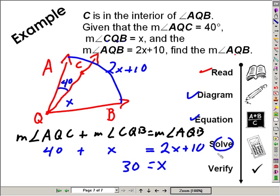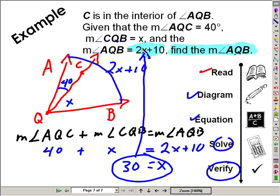But did we actually answer the question? We've solved the equation. Let's verify that we answered the question. The question is, find the measure of AQB. Well, AQB is 2x plus 10. So let's take this answer, 30, place it back into the problem, and what is twice 30 plus 10? And the answer now is going to be twice 30 plus 10, or 70.